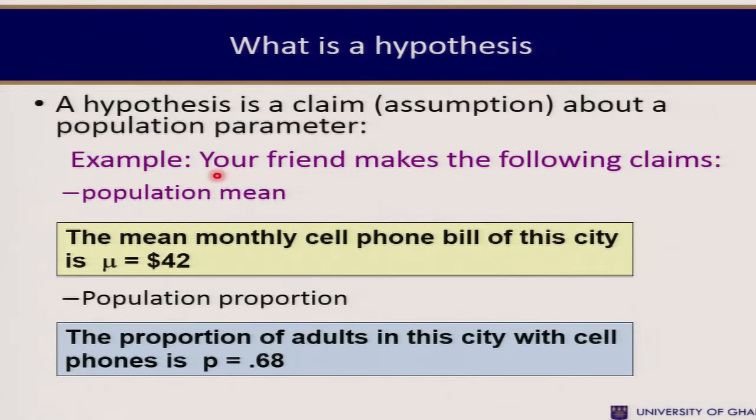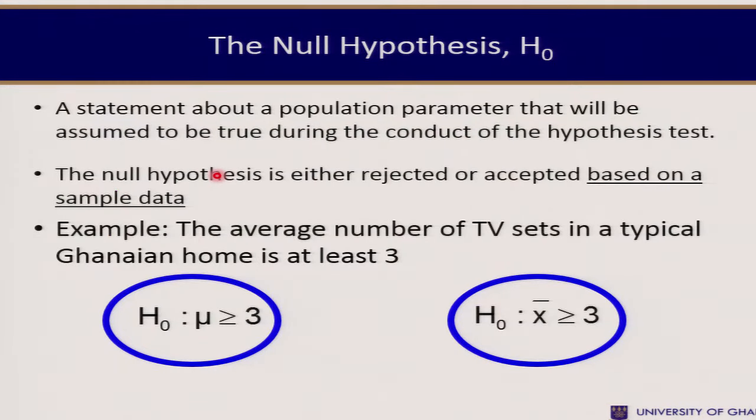So what is a hypothesis? A hypothesis is just a claim or an assumption about a certain population parameter. For example, your friend might make a claim such as the mean monthly cell phone bill of this city is $42, or the proportion of adults in a city with cell phones is 68%. This is a claim that needs to be tested.